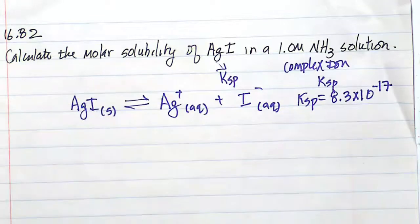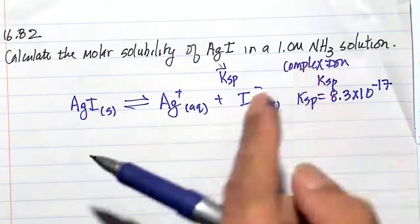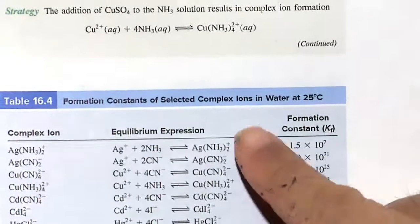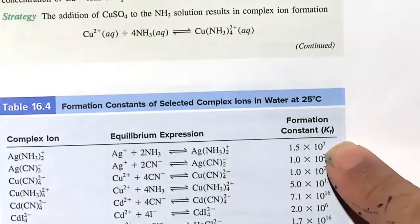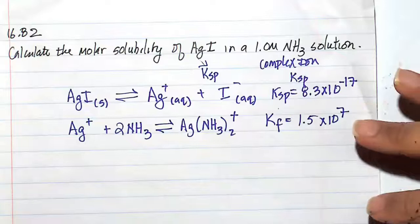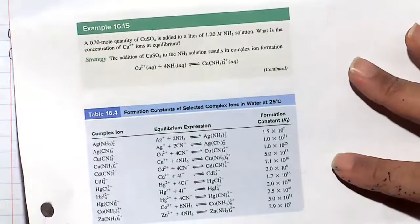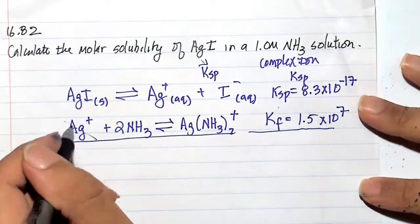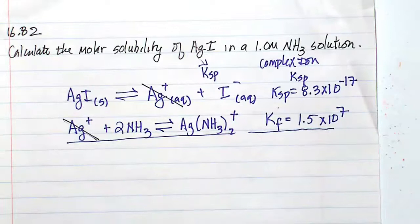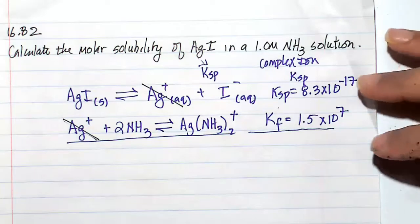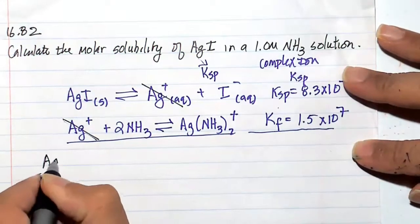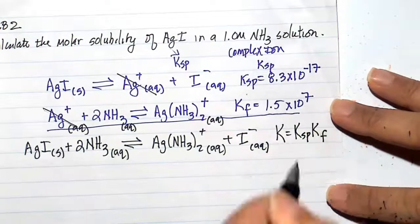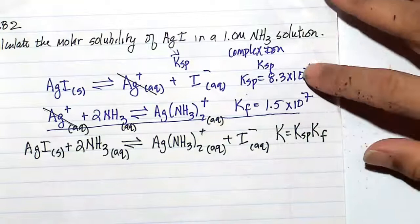Whatever small amount gives us Ag⁺ will immediately form a complex with NH3 according to the equation for the complex ion. So let's write the equation for complex ion formation and go ahead and add these two reactions. When you add those two reactions, it's important to recognize that you multiply equilibrium constants to get the new equilibrium constant. Also, when you add the two reactions, the Ag⁺ cancels, and we get a new equilibrium constant which is the product of Ksp and Kf.